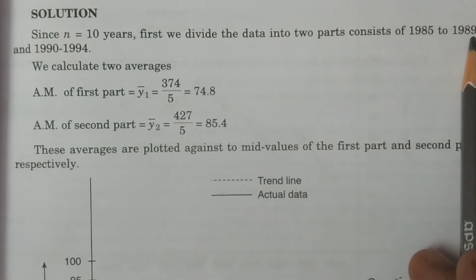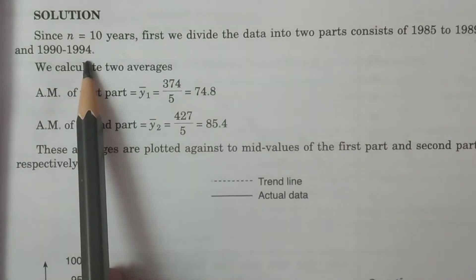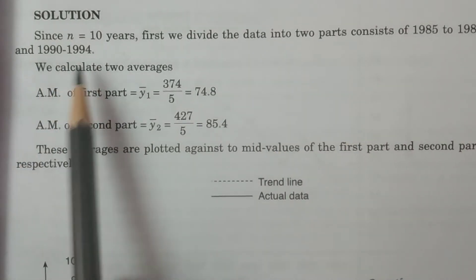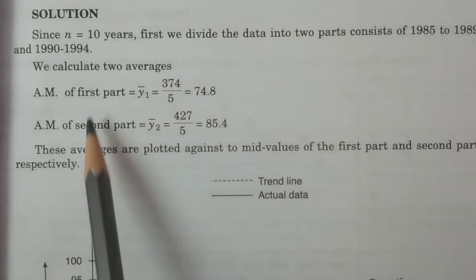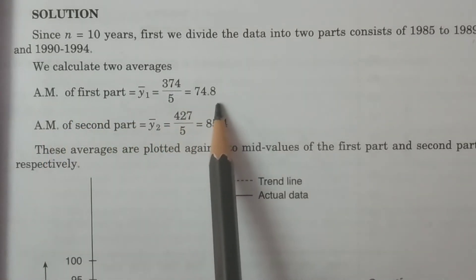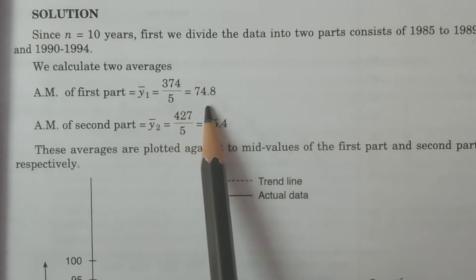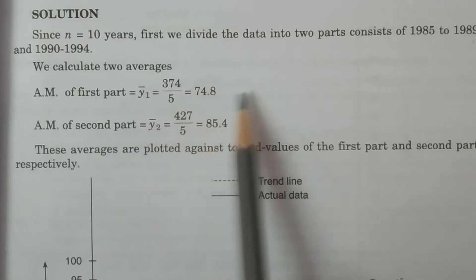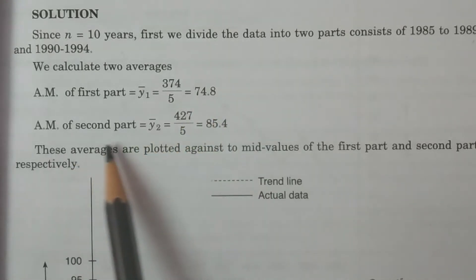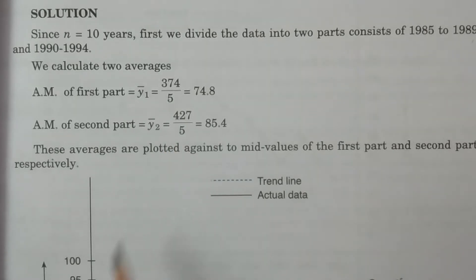The first part is 1985 to 1989, and the second part is 1990 to 1994 — two particular parts. Then you calculate the arithmetic means: total divided by five, because we have five periods each. The arithmetic mean of the first part comes to 74.8, and similarly for the second part.